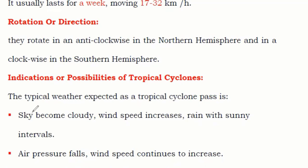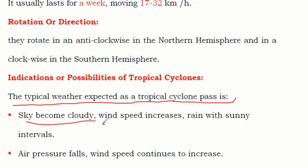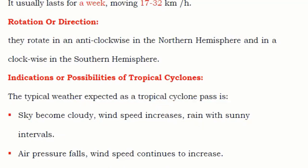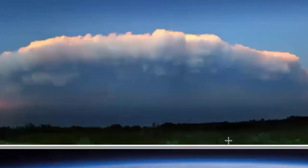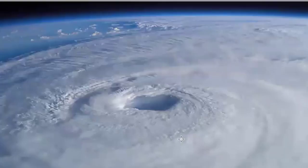When a tropical cyclone is passing, the typical weather expected includes: the sky becomes cloudy, wind speed increases, and there is rain with sunny intervals — you'll find rain, then sun, then rain, then sun again. The wind speed increases over time and the sky becomes increasingly cloudy. From the ground it looks like this, and from a satellite view it looks like this spiral formation.